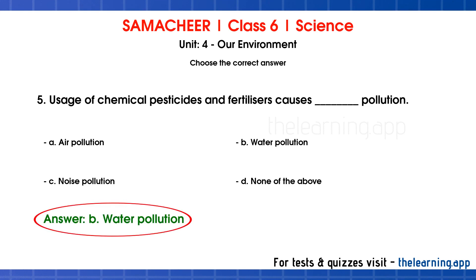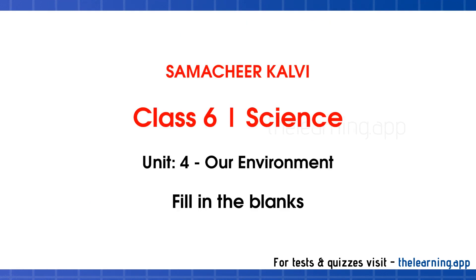If we use fertilizers and pesticides, they pollute the land. The output runs off the land and pollutes the water. That is why chemical pesticides and fertilizers cause water pollution.